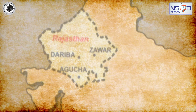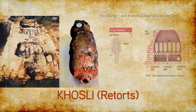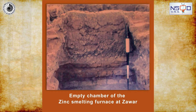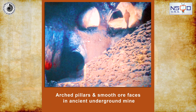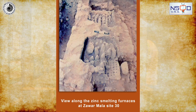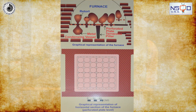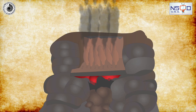In ancient India, early miners and metallurgists used a special reverse distillation apparatus called Khosli Retorts to extract zinc. Early Indian alchemists, who were familiar with the process of distillation and condensation of mercury, influenced the design of Khosli. It was this reverse distillation process that may have led to the design of the zinc smelting process at Zawar on an industrial scale.